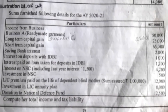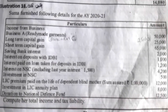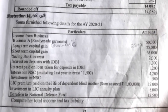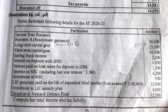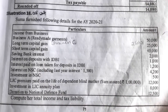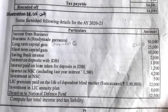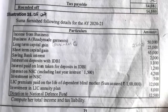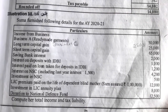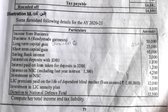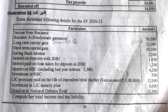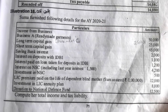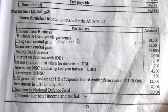Hello students, today we will learn the next illustration — illustration number 10. See the question; I'll read out the question. Summa furnished the following details for the assessment year 2020-21. The particulars and amounts are given.